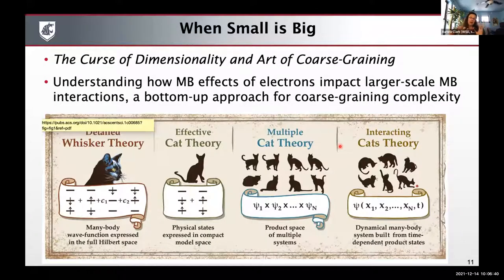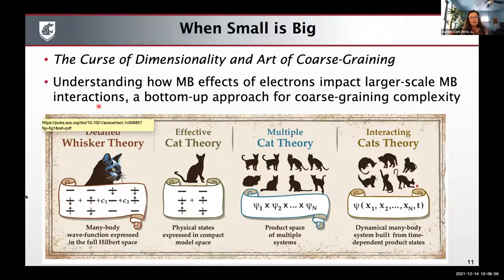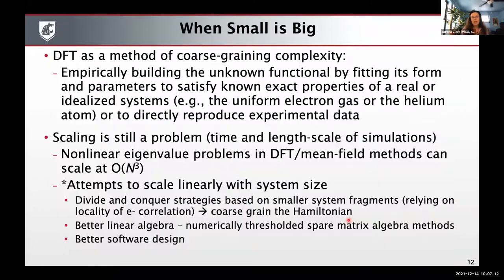When we think about coarse-graining, there are obviously a lot of electronic structure methods that have incorporated coarse-graining into this process — thinking about a bottoms-up type approach, where maybe we take knowledge about the exact wave function at a very high level of detail and create an effective model that gets coarse-grained further. DFT might be thought of something like this, where you're empirically building these unknown functionals by fitting them to exact properties. But scaling is still a really big problem, and much of what I heard about have been discussions about how we try to scale things linearly with system size.